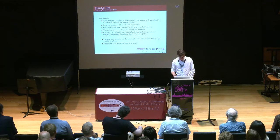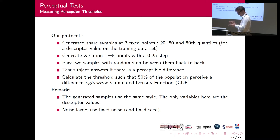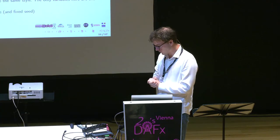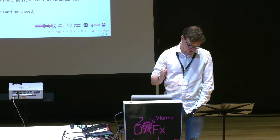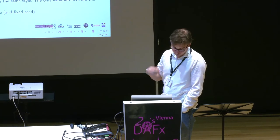This is our DIR protocol. We use the 20th, 50th and 80th quantiles as our bases, and generate variations around these points plus or minus 8 with a certain step. Each test participant would listen back-to-back to two sounds: one is the base, the other has a certain variation, which is recorded. Once we gathered measurements, we estimate a cumulative density function to get the threshold at which 50% of people find a difference between the two examples. The generated samples are all of the same style, and in the noise layers, the noise is fixed.